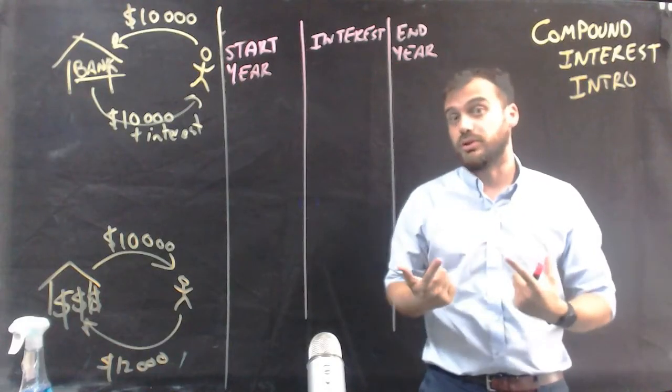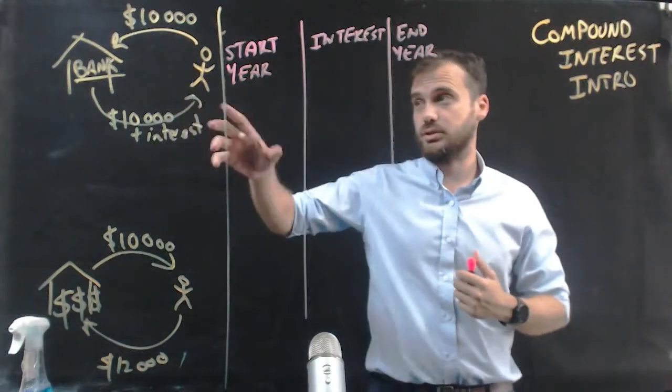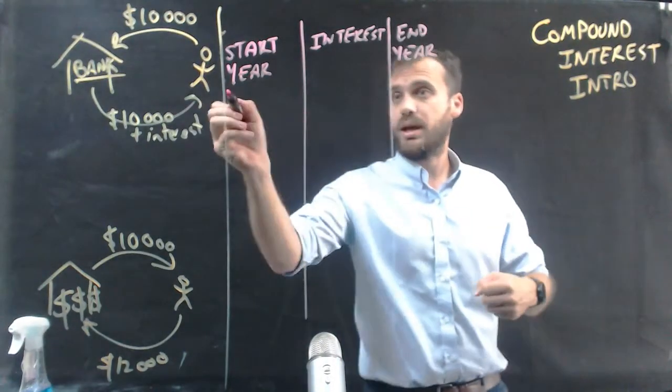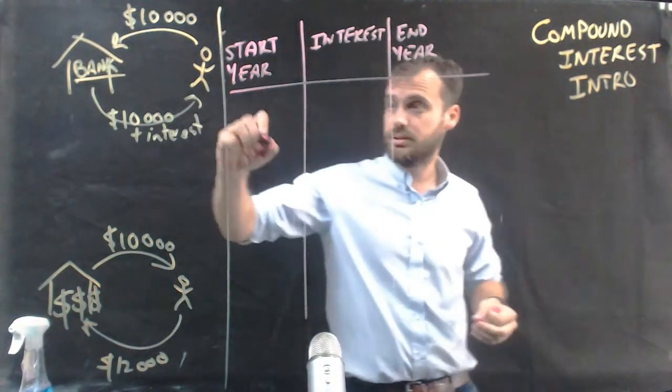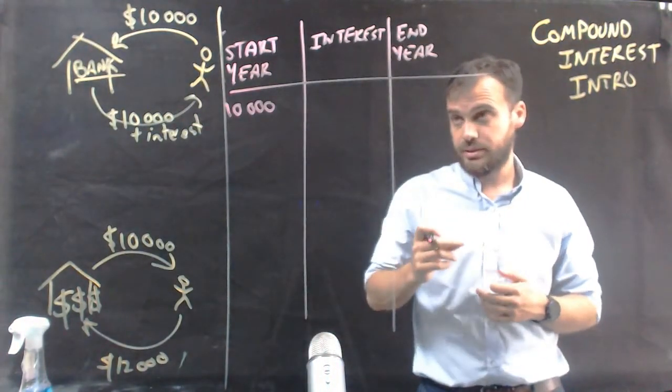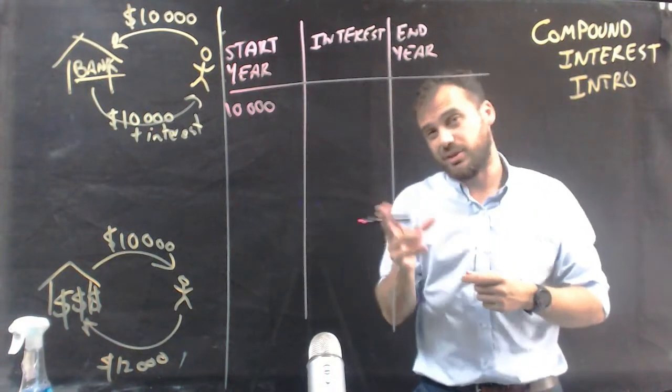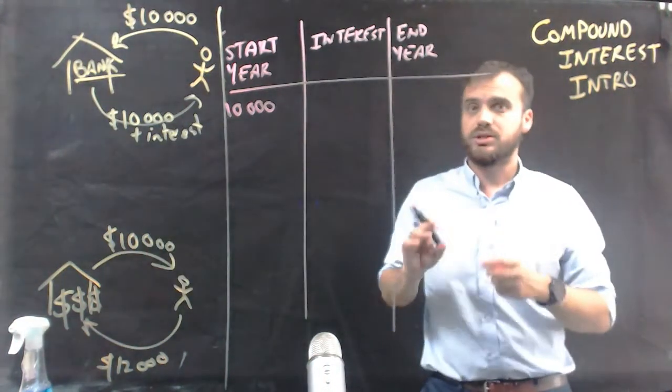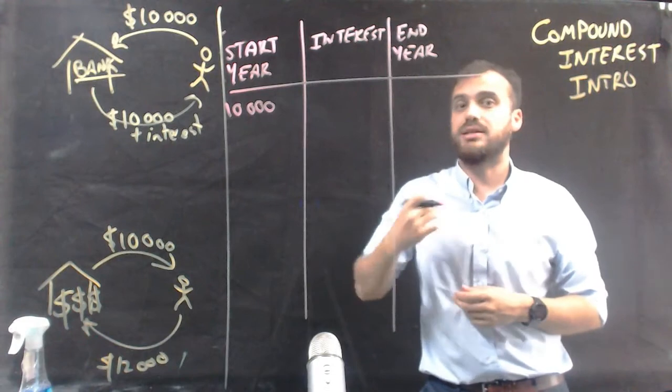So let's take a look at what this would look like. So at the start of the year, now the bank holds on to that money, or they don't hold on to it, they lend it to other people. So they're going to pay us interest on that.